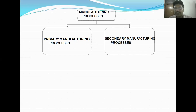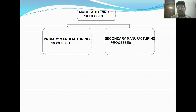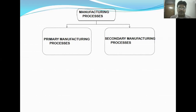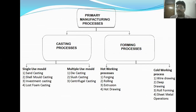Manufacturing processes are divided into two basic parts: primary manufacturing processes and secondary manufacturing processes. Processes used to add value to raw material are known as primary manufacturing processes. In secondary manufacturing processes, the product coming from primary manufacturing is again processed in order to give final shape and size. In the next slide, we will discuss what the primary manufacturing processes are.